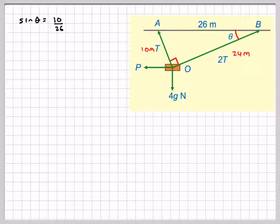So from that, we can now say the sine of this angle is opposite over hypotenuse, so that's going to be 10 over 26, which is 5 over 13, and cos of this angle is going to be 24 over 26, which is 12 over 13.